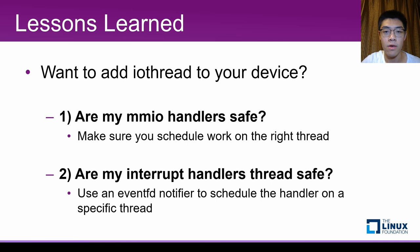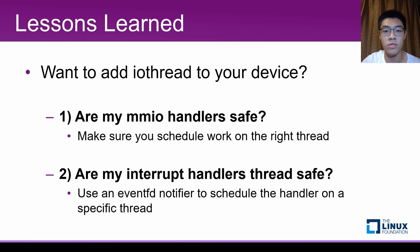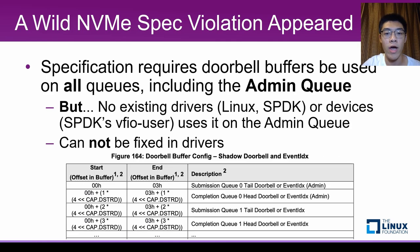By the way, if you want to incorporate IO thread into your device, here are the things you might want to check. First, make sure your MMIO handlers work on the right thread — this means you need to attach the correct AIO context for each event notifier, timer, and bottom half. Second, make sure your interrupt delivery is thread-safe. The de facto standard approach is to use an EventFD-based notifier to schedule all interrupt assertions and de-assertions on the same thread.